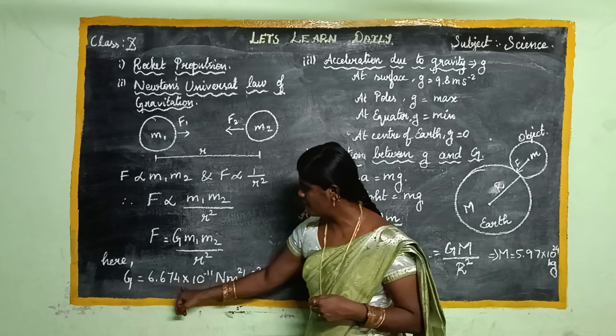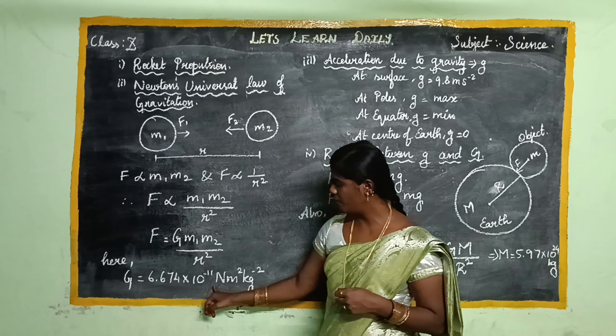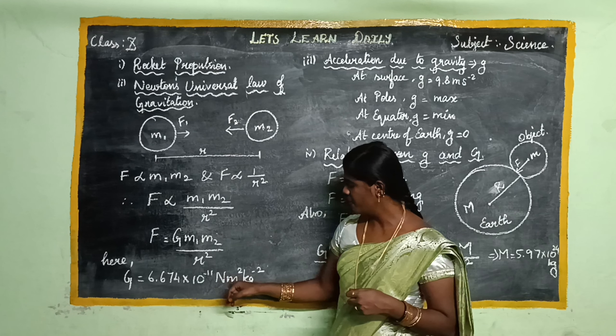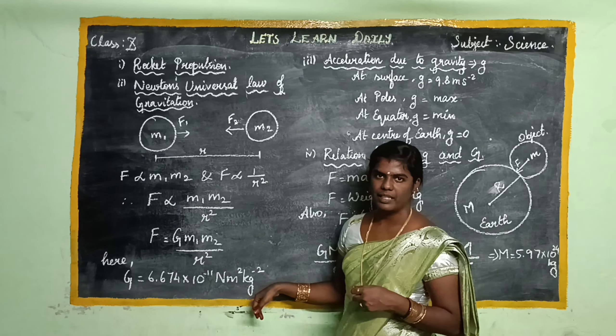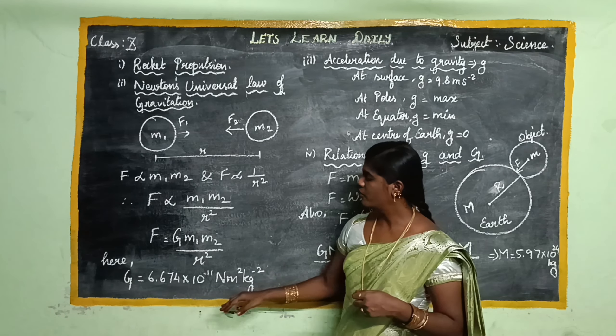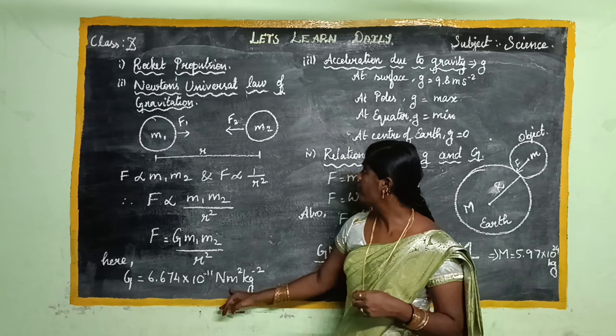The value of G is 6.674 times 10 to the power of minus 11 N·m² per kg².